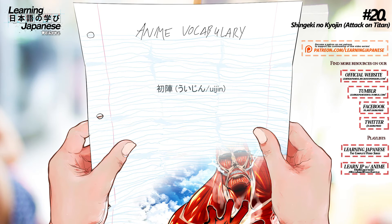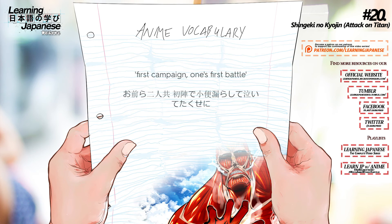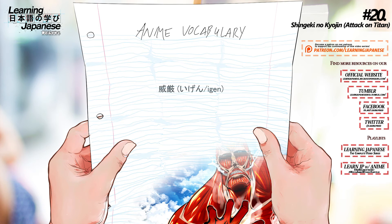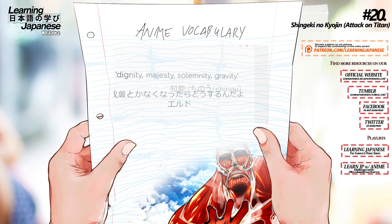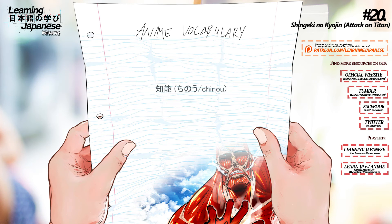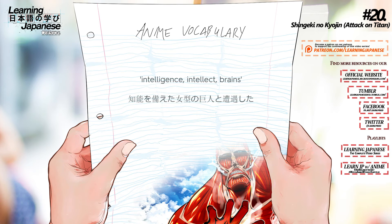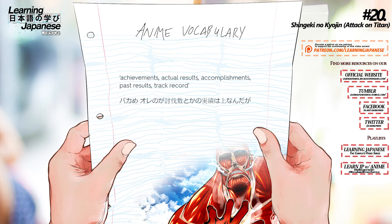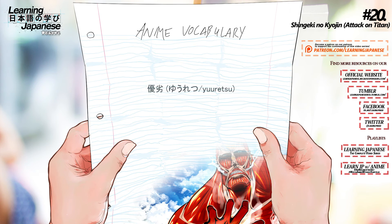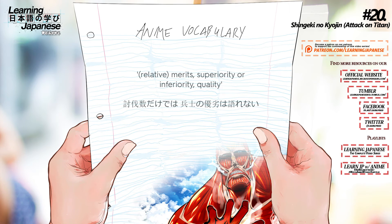初陣 (uijin) — First campaign, first battle. 威厳 (yigen) — Dignity, majesty, solemnity, gravity. 知能 (chino) — Intelligence, intellect, brains. 実績 (jisseki) — Achievements, actual results, accomplishments, past results, track record. 優劣 (yuretsu) — Merits, superiority or inferiority, quality.